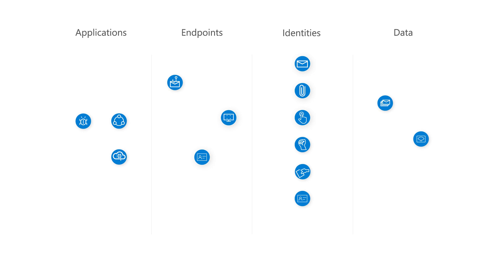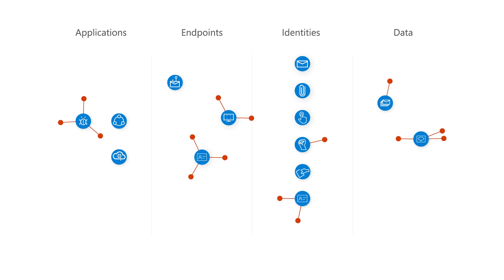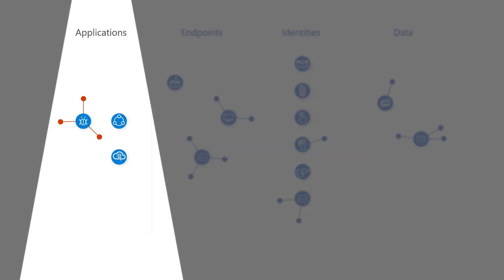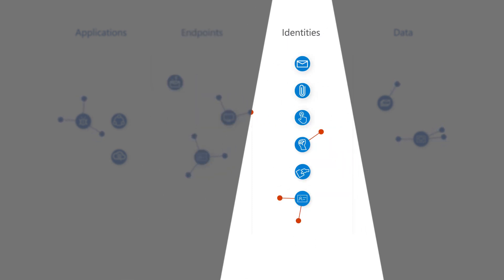Defending that landscape can be challenging. First, the amount of threat signal is enormous, and it's exhausting already-stretched security teams — alert fatigue. Normalizing and analyzing it in a timely fashion is just impossible. Second, signals across domains are viewed in isolation, so security teams can't see lateral movement and persistence, much less overall context.